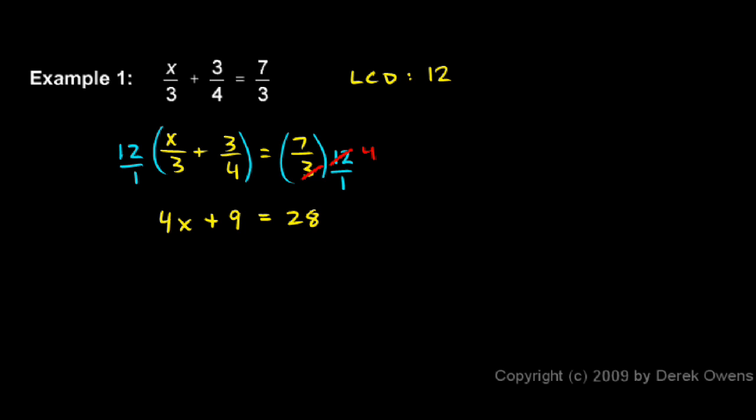We'll subtract 9 from each side. When we subtract 9, we have 4x remaining on the left, and on the right we have 28 minus 9, which is 19. Then the final step is simply to divide by 4. So x = 19/4, and that's the answer.